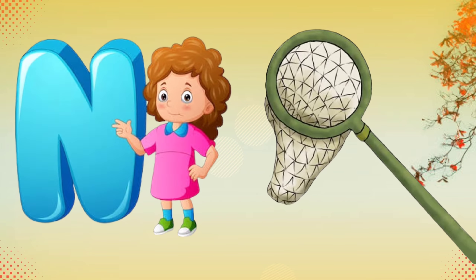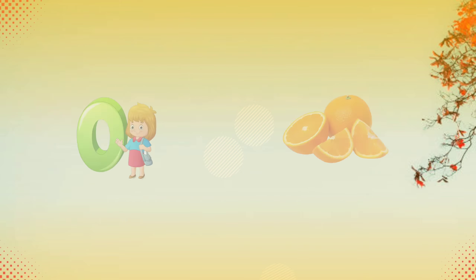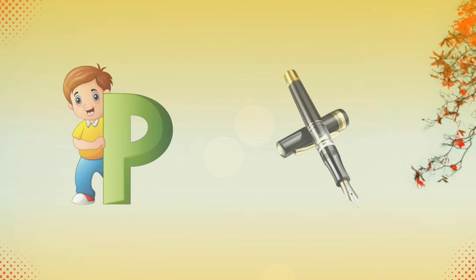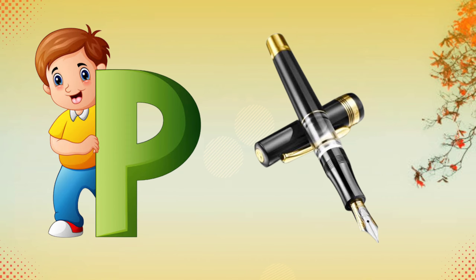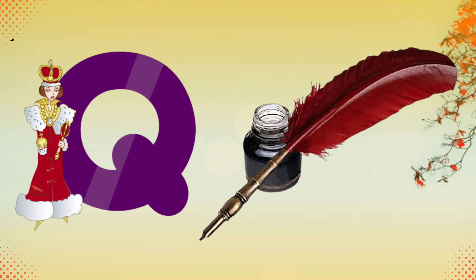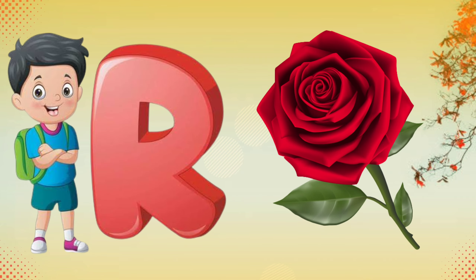N for net, O for orange, P for pen, Q for quill, R for rose.